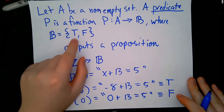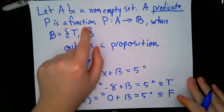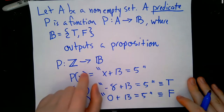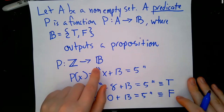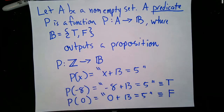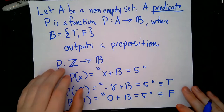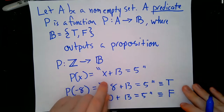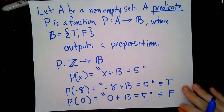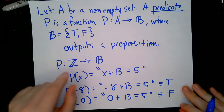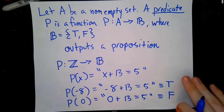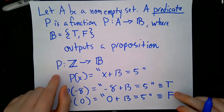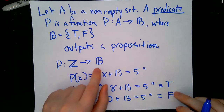It's really important to note that a predicate is specifically a type of function. So when we have p(x) is x plus 13 equals 5, defined as taking in integers and giving out a boolean value, any integer we put in will always give us true or false. Not only that, but for any integer we put in, it will either always be true or always be false — you can't have an integer that gives a statement that is both true and false, or neither true nor false. This is partly because p is a function and partly because we are outputting propositions.